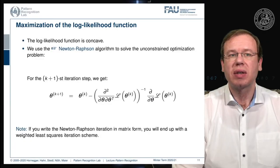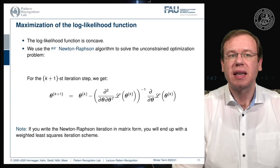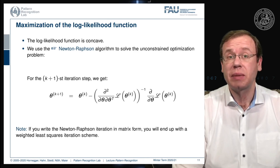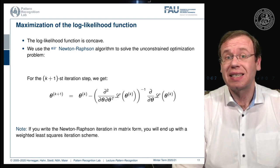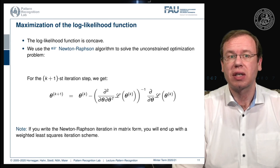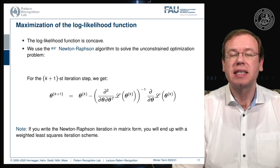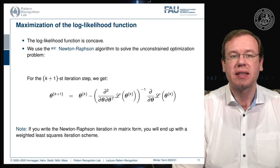This is our maximization of the log likelihood function. We've seen that it is concave, meaning that the negative of the log likelihood function is convex. And this is the reason why we're able to use the Newton-Raphson algorithm to solve this unconstrained optimization problem.